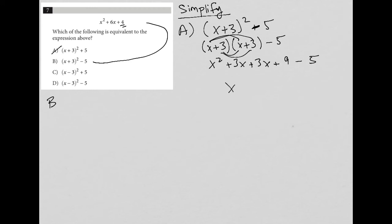Which would mean I would have x squared plus 6x. And then 9 minus 5 is, in fact, positive 4. So that is exactly what I'm looking for. So I believe that choice B is the correct answer.